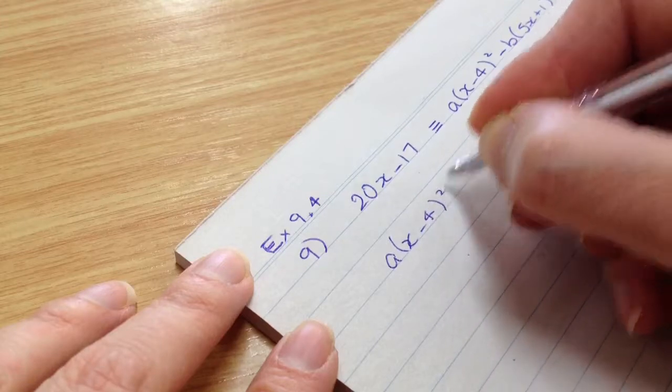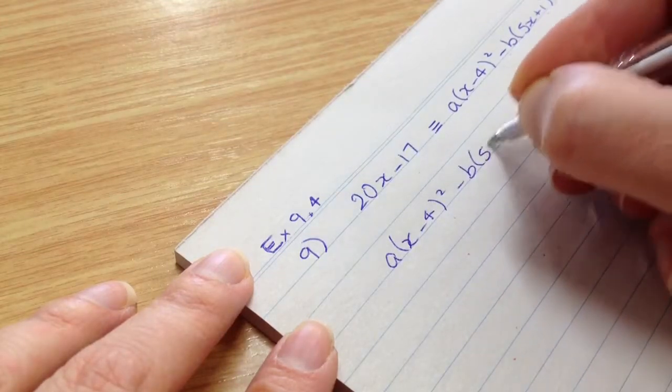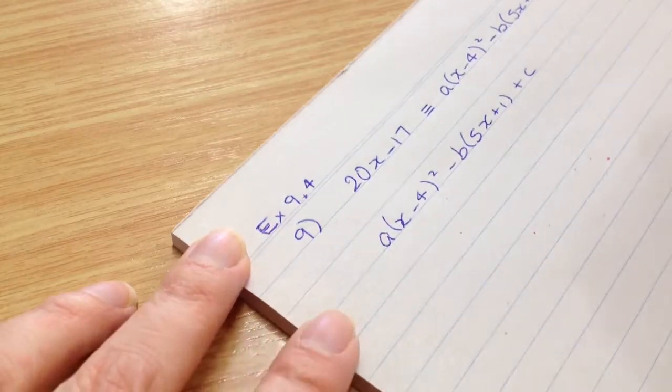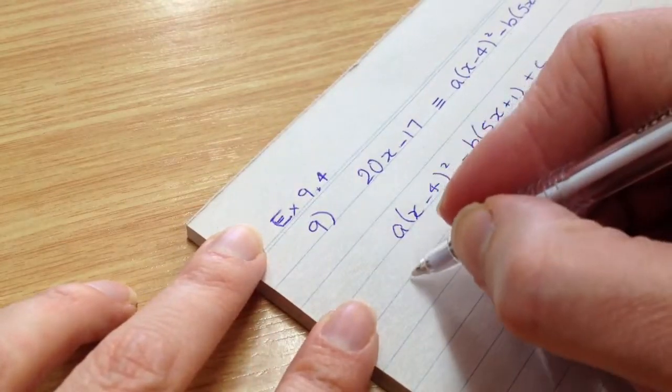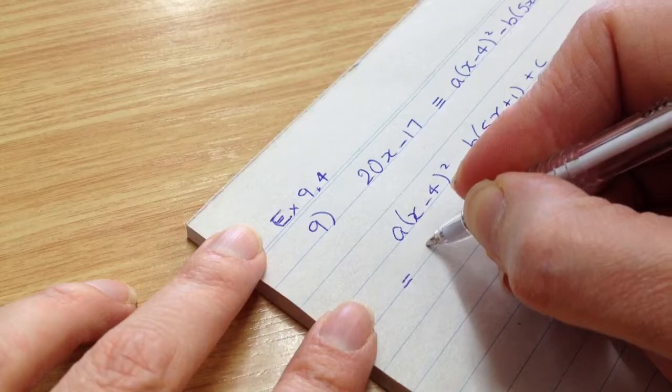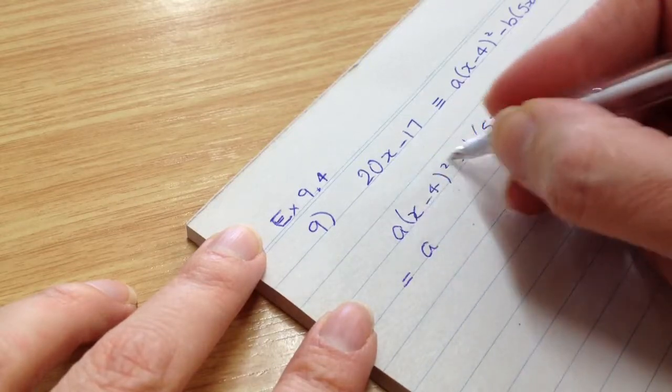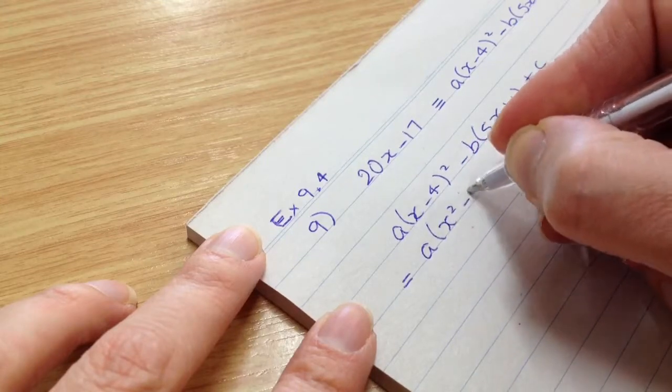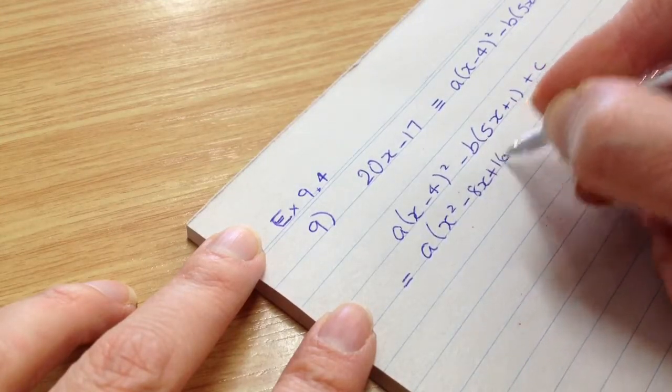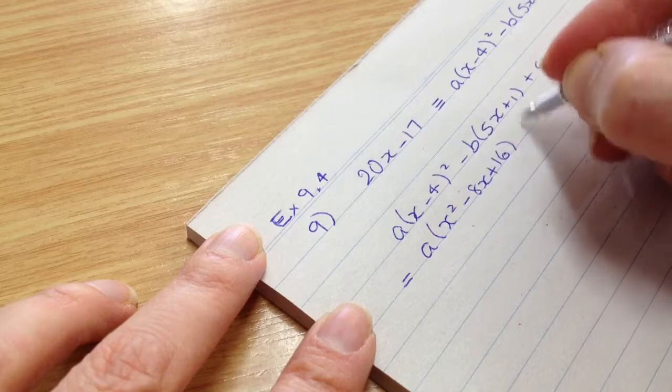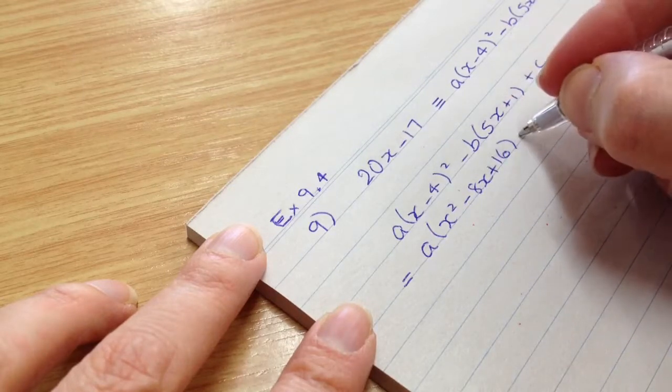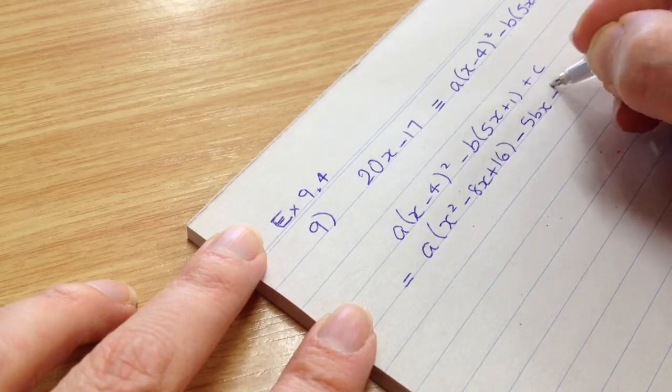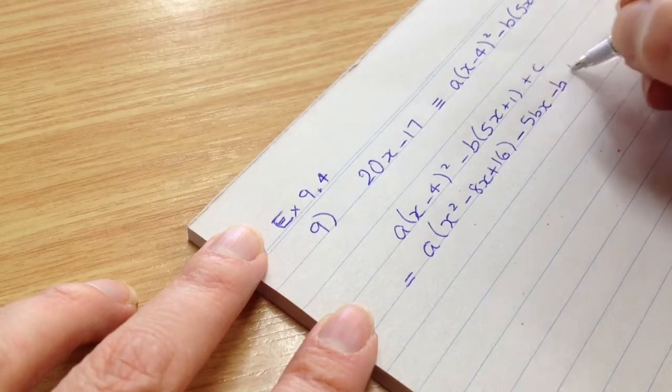So taking that side, just rewriting it and we're going to expand it now. Okay, so on the next line, a, now if we expand this, binomial expansion, we get x squared minus 8x plus 16. Okay, and then expand this one. So minus 5bx minus b and then we're going to plus c.